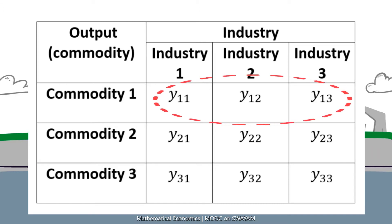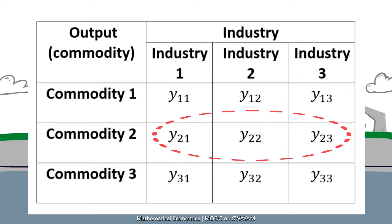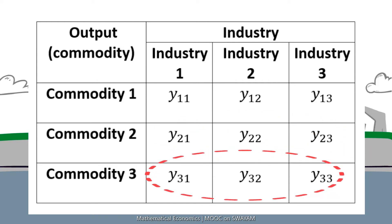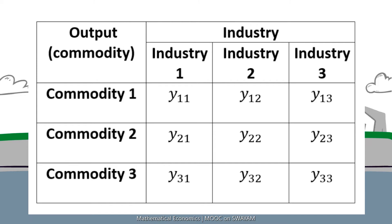Adding the entries of the first row gives the total output of the first commodity that will have to be produced, which will be used as intermediate input in the three industries. Similarly, adding the entries of the second row gives the total output of the second commodity to be produced that will be used as intermediate input in the three industries. And adding the entries of the third row gives the total output of the third commodity to be produced that will be used as intermediate input in the three industries.